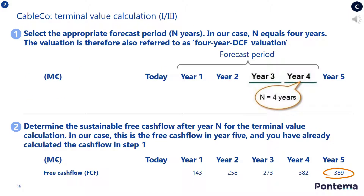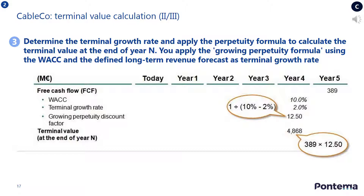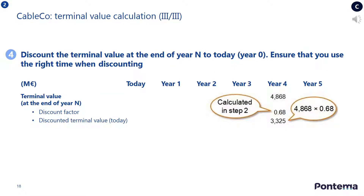Here are the outputs of the first two tasks. The case study requested valuation to be performed on a four-year horizon, and as you already calculated the free cash flow in year 5, you have determined the free cash flow value after year N necessary for the terminal value calculation. To determine the terminal growth rate, you need to apply the growing perpetuity formula. Here, you use the weighted average cost of capital and the growing long-term revenue forecast, which is 2%, to arrive at a terminal growth rate of 12.5. You should use this growth rate to calculate the terminal value at the end of year N. In this last task, discount the terminal value at the end of year N to today's value by using the discount factor previously calculated for year 4.